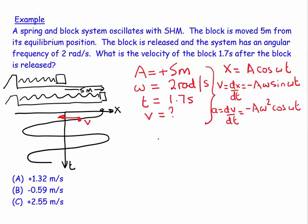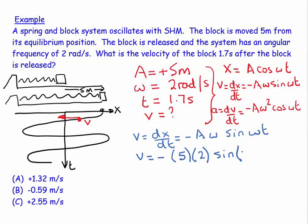And the one that's appropriate for this problem, or the velocity, so the one that's appropriate for this problem is that V is equal to dx by dt, which equals minus A omega sine omega T. And I like to do as little in my head as possible, so I'm going to just go step by step and say my A is 5, and my omega is 2, and then I have a sine, and then my omega is 2, and my T is 1.7. So then I'm going to say, well, okay, that's equal to minus 10 sine 3.4.